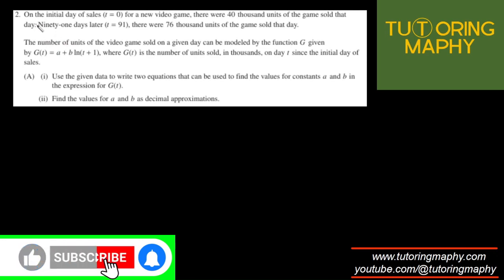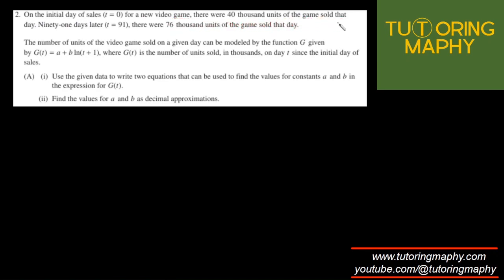This is Calculator Active. On the initial day of sales, T equal to 0 for a new video game, there were 40,000 units of the game sold that day. And 91 days later, that is T equal to 91, there were 76,000 units of the game sold that day. The number of units of the video game sold on a given day is given by this logarithmic function, where G is the number of units sold in thousands on day T since the initial day of the sales.